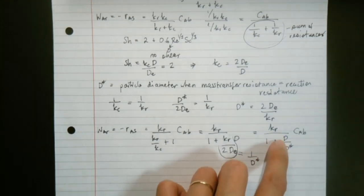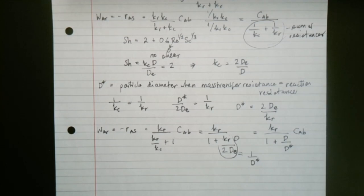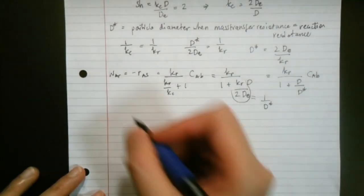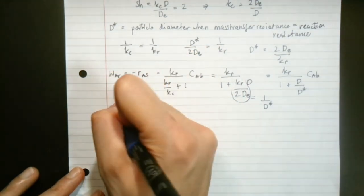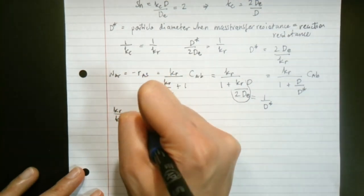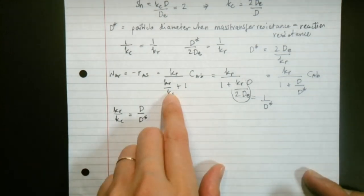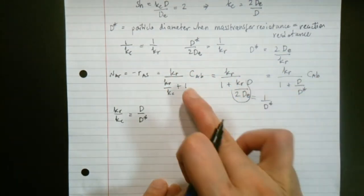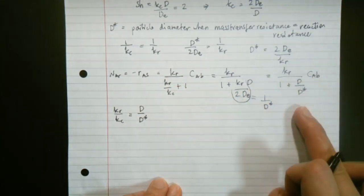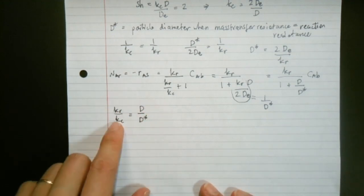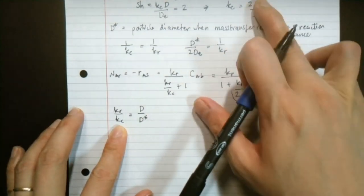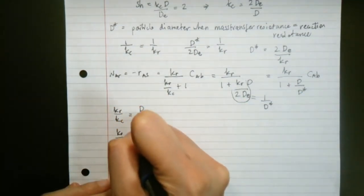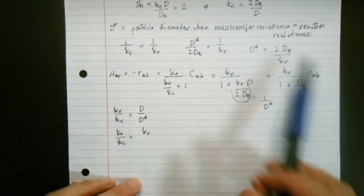By comparing the particle diameter D with D-star, we can determine whether the process is limited by mass transfer or reaction rate. We have the relationship KR/Kc = D/D-star. When D is greater than D-star, KR is greater than Kc — the reaction is faster than mass transfer — so the process is mass transfer limited. When D is less than D-star, KR is less than Kc — mass transfer is faster than reaction — so the process is reaction limited.